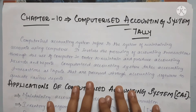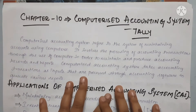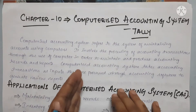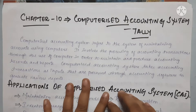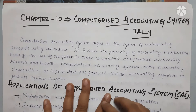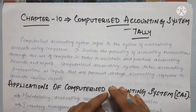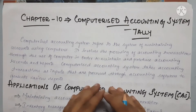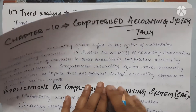Hi friends, welcome back to my channel Savvy Loaner. We are now in the 10th Chapter of Computerized Accounting System. We have uploaded all the 9 chapters on our channel. You can check it out in the description — we have a playlist for every chapter. If you want to subscribe to our channel, click the bell icon. We have completed the 9th Chapter.